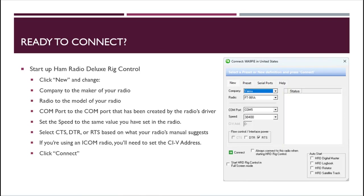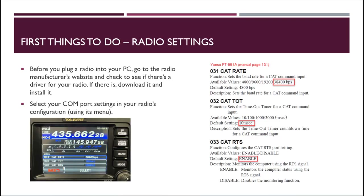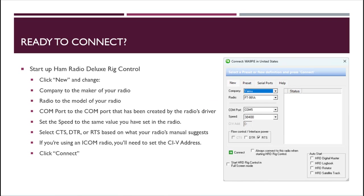When ready to connect, create a new connection in HRD: set the company to your radio manufacturer, set the model to your radio's model, set the COM port to the enhanced port you identified, and set the speed to the baud rate you configured on the radio. You could set both to auto and it will find them, but since this radio has two COM ports I pin it to COM port 5 at 38,400 baud, and set flow control to RTS as the manual specifies.